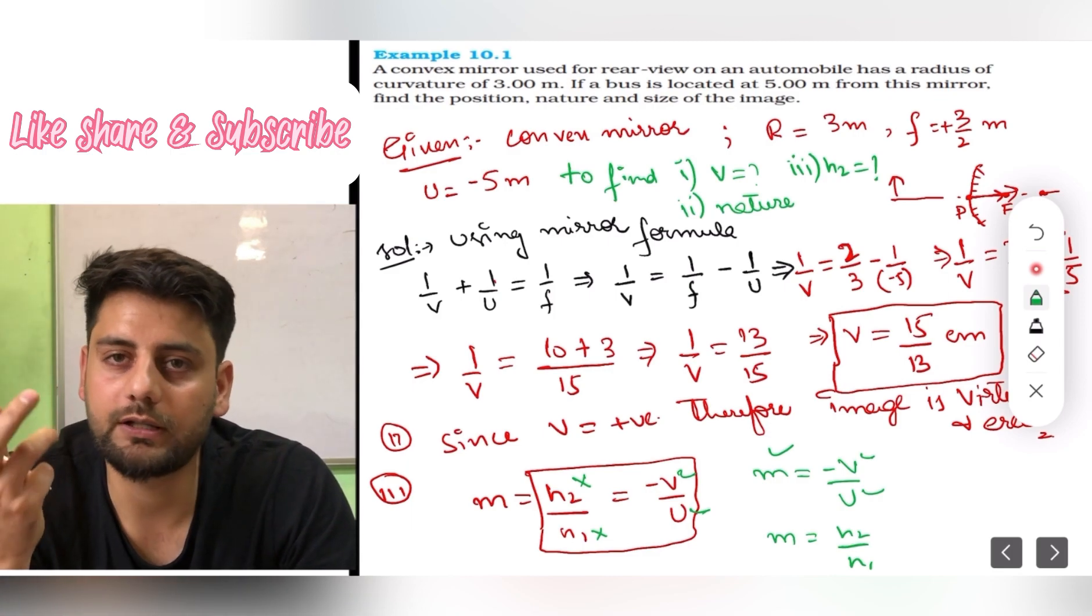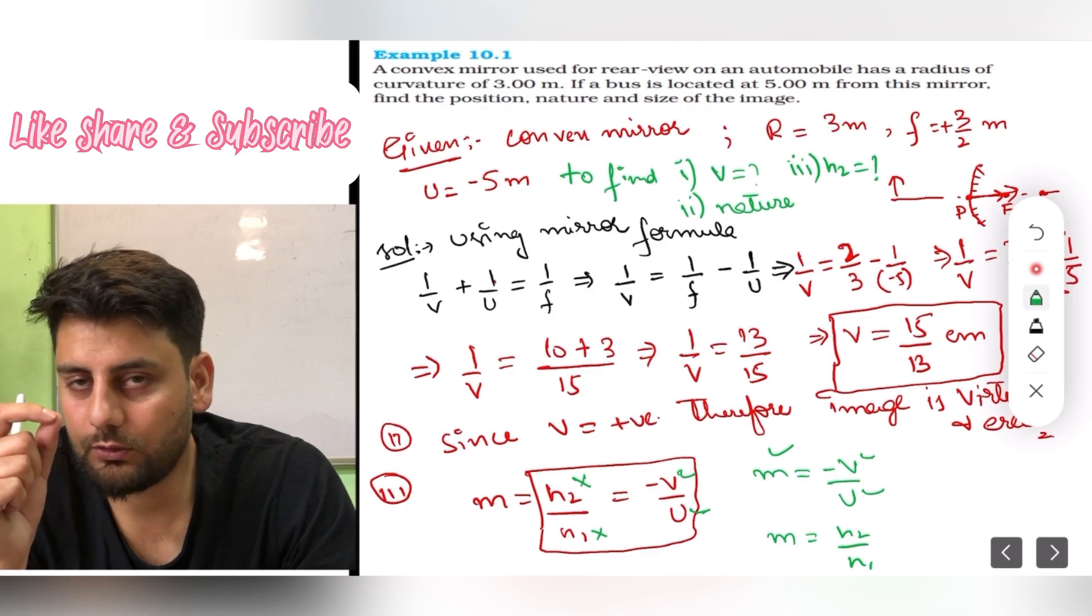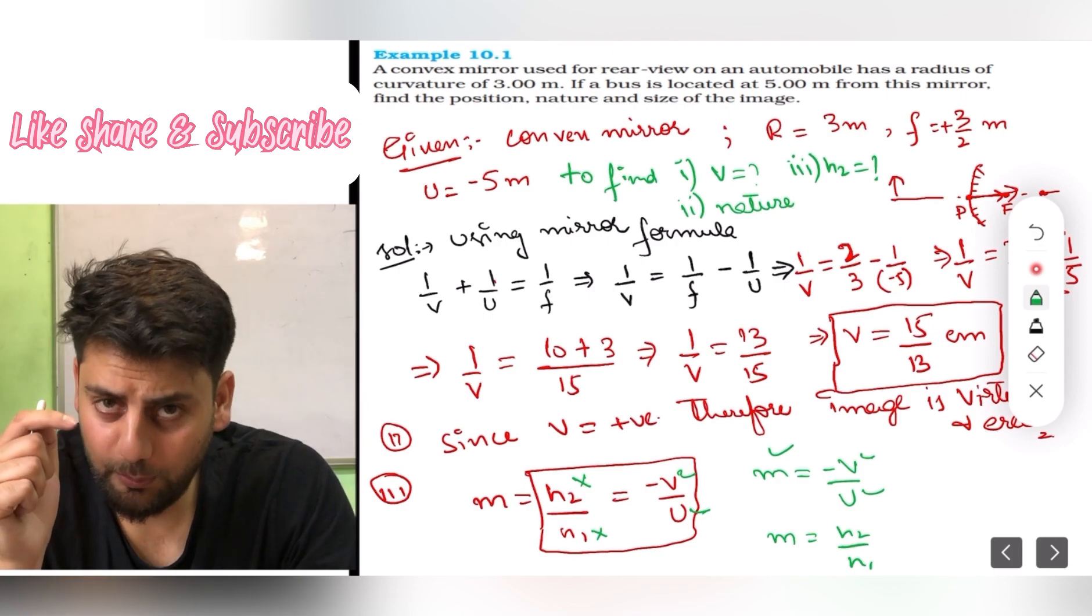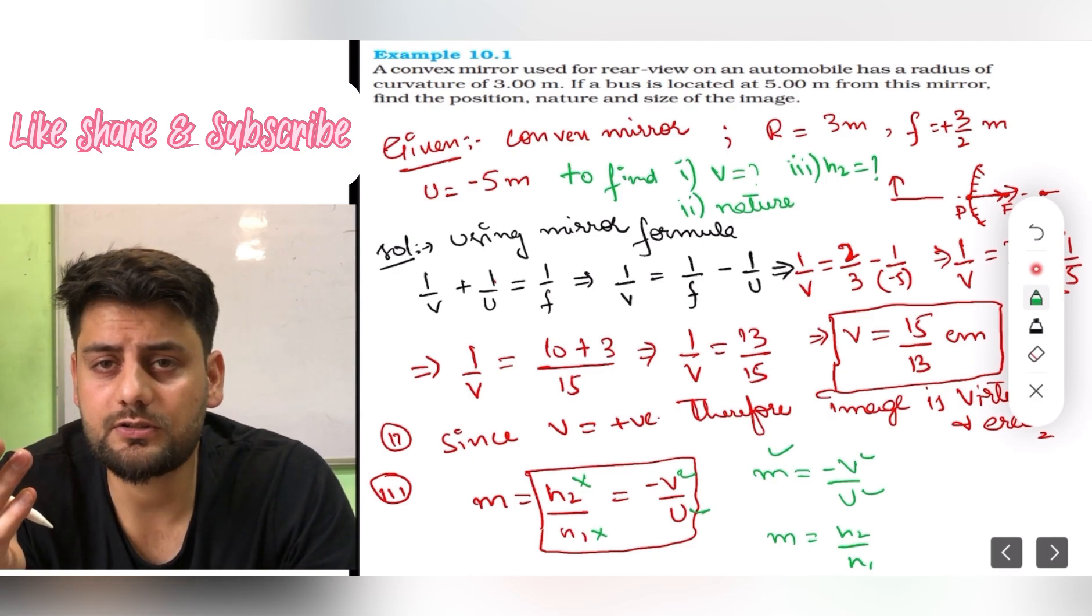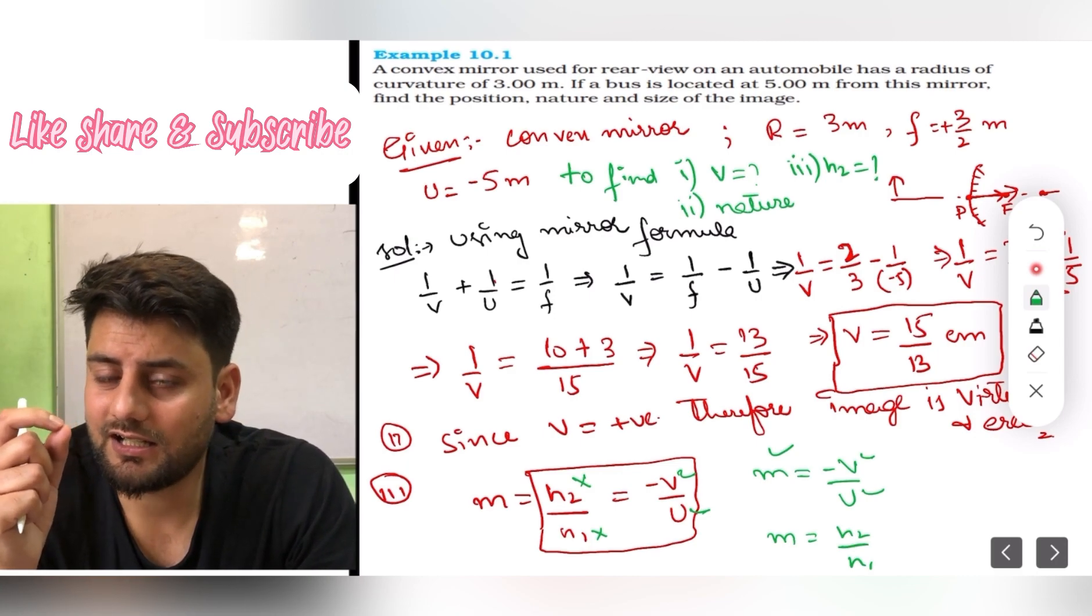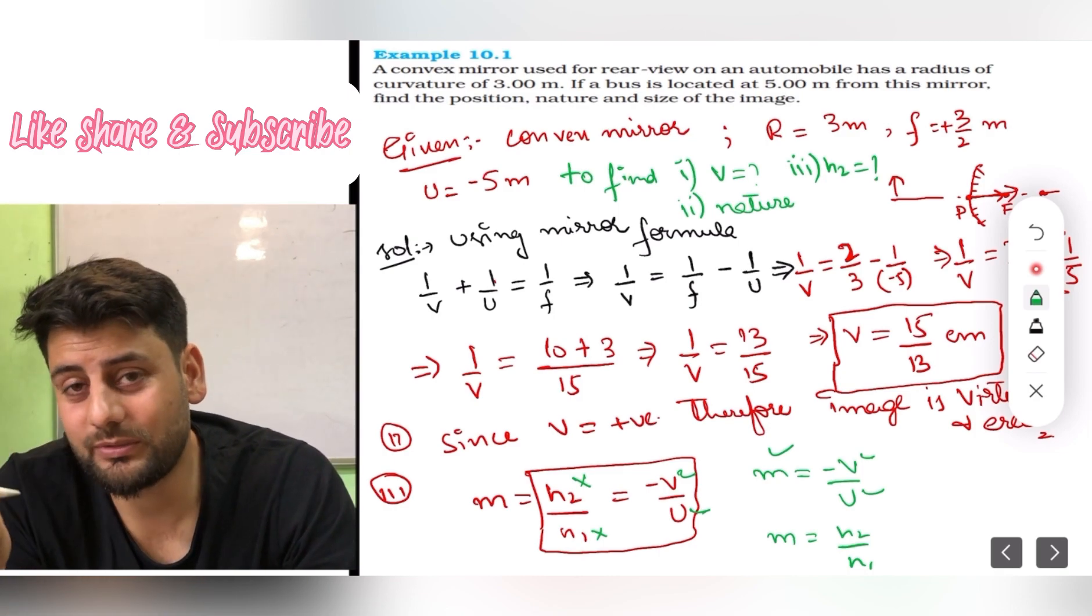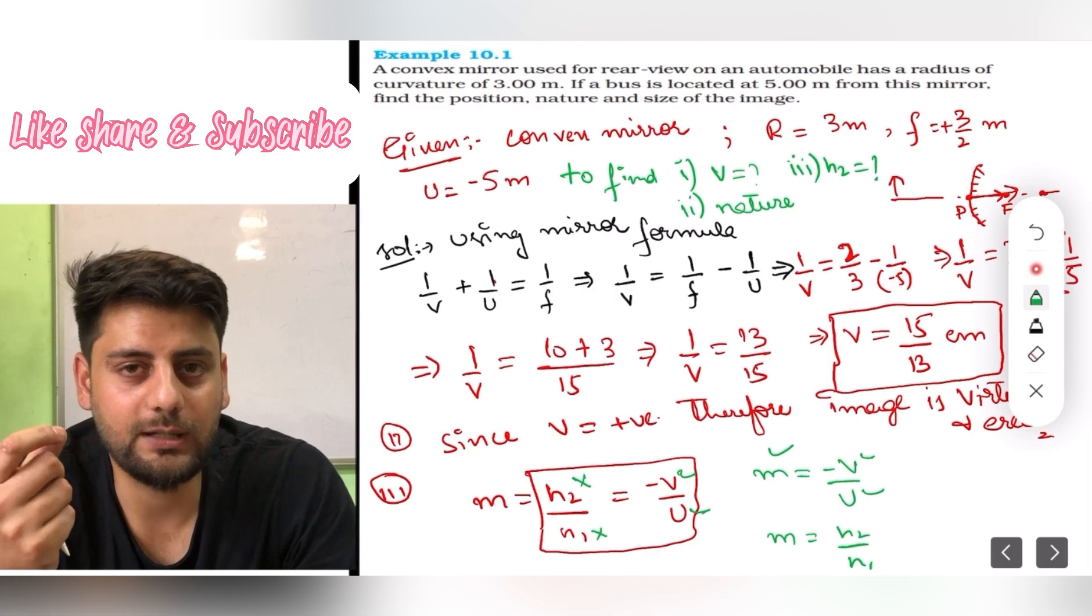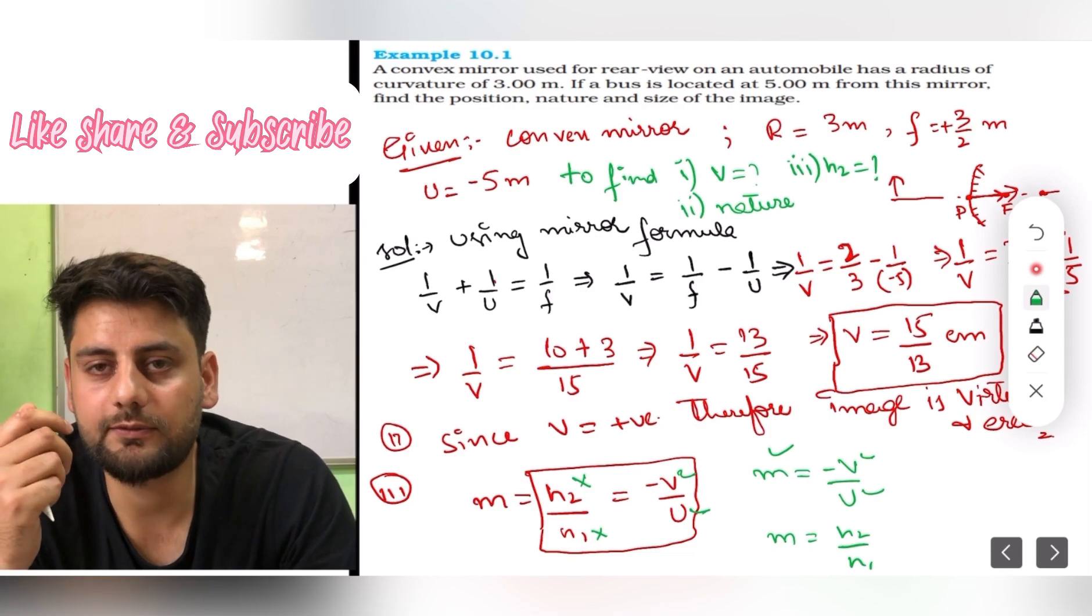So we can do one thing. Using m equals minus v upon u, I will find m because v and u I already know. And then using m equals h2 upon h1, I still cannot find h2 because h1 is missing. So the best thing we can do is find magnification and then assume the height of object was, suppose, two centimeter, then from there you can calculate h2.